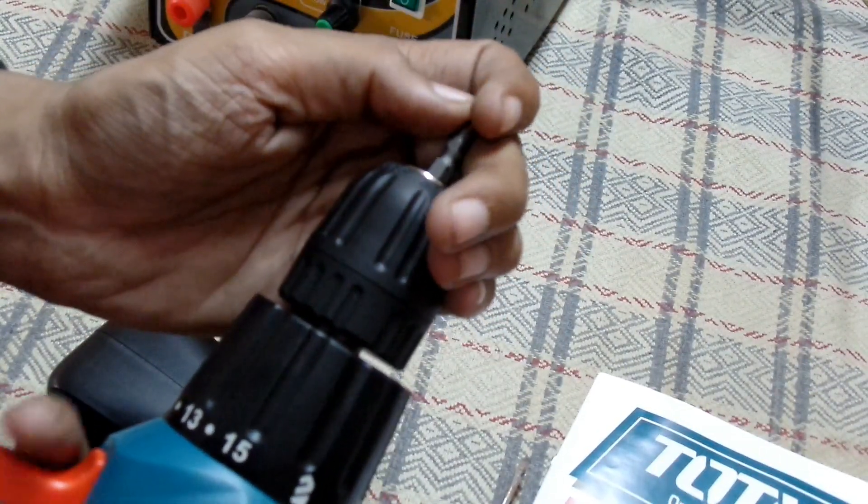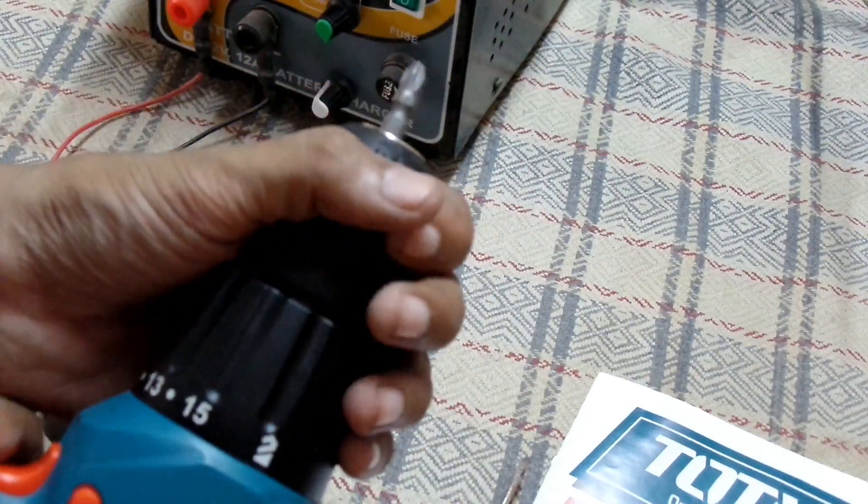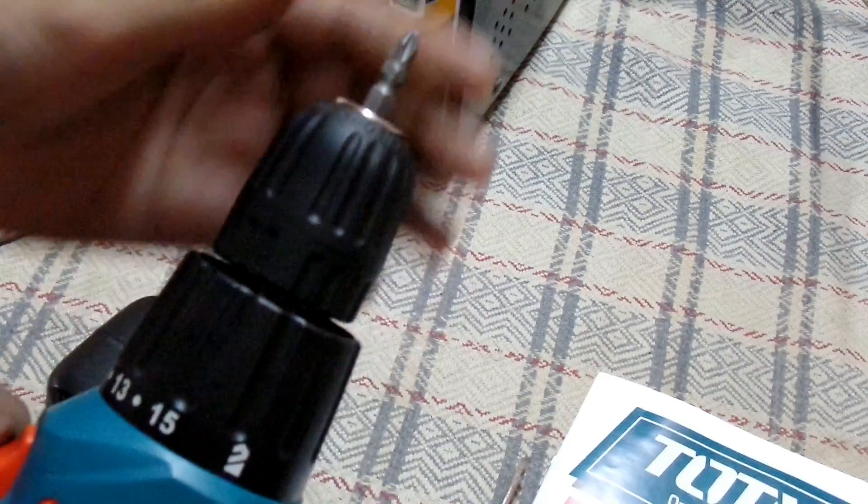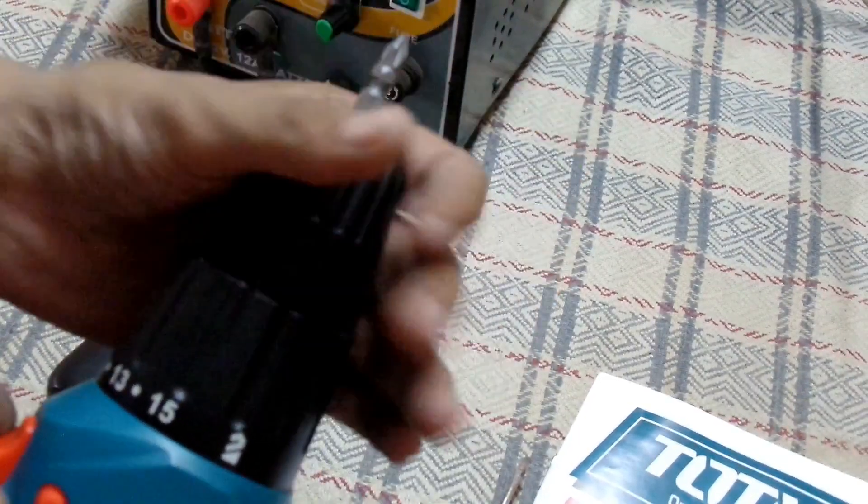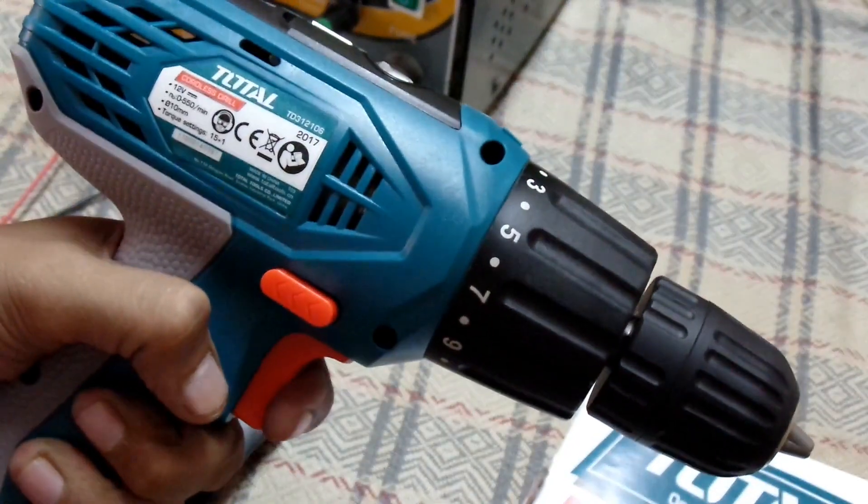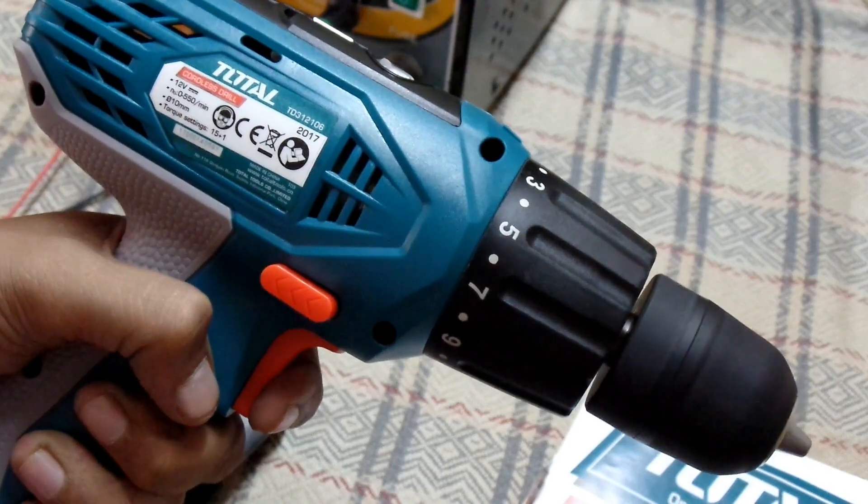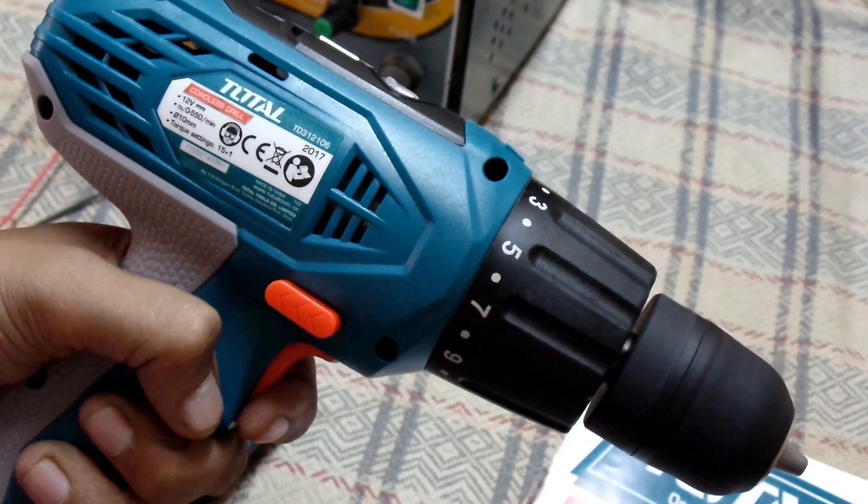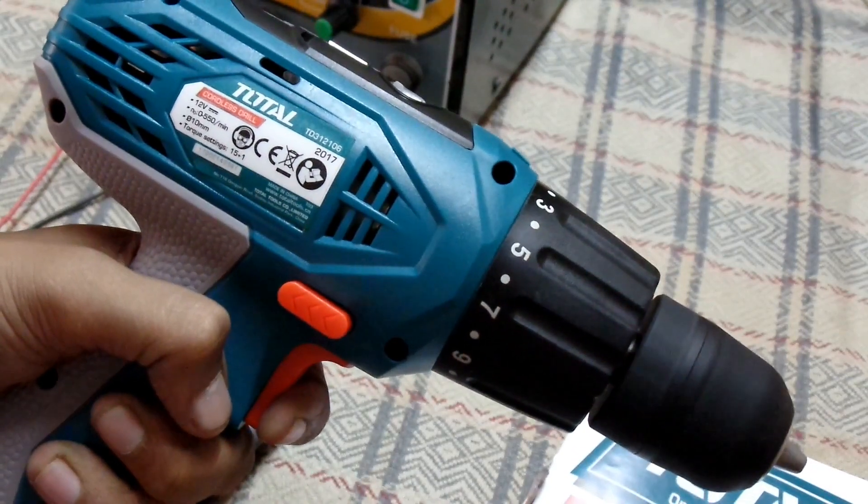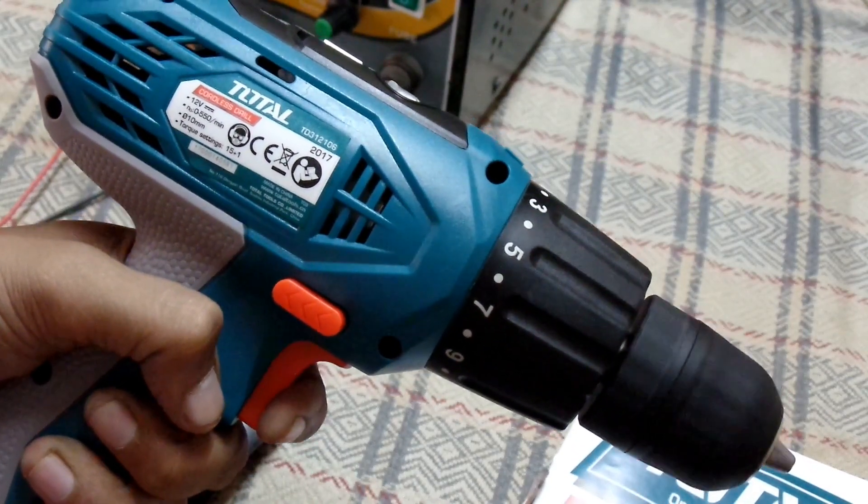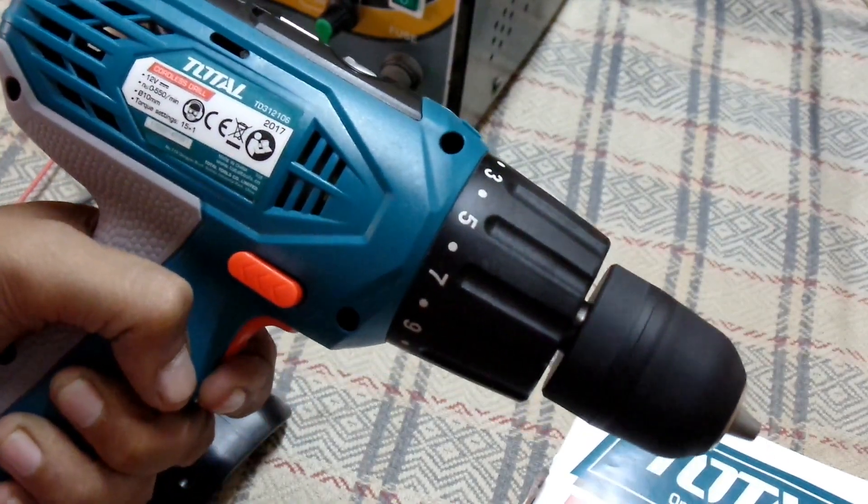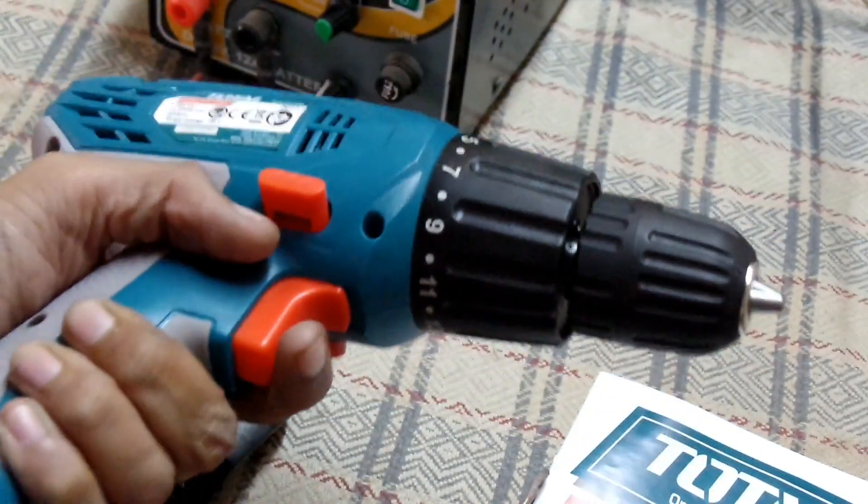This is really powerful and there are about 15 to 16 torque settings. However, it does not contain hammering, but it does have drill mode. There is variable speed with the trigger, and when you release the trigger, there is an electrical brake which stops the drill instantly.